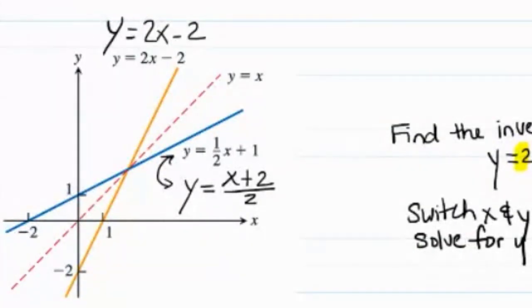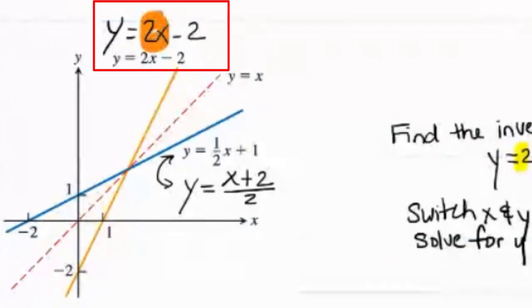But the reason I wanted to write it this way is so I could show you something about the operations. In the first function, y equals 2x minus 2, we have the operation of multiplication. The x is being multiplied by the 2. And then after we multiply it by 2, we subtract 2 from it.